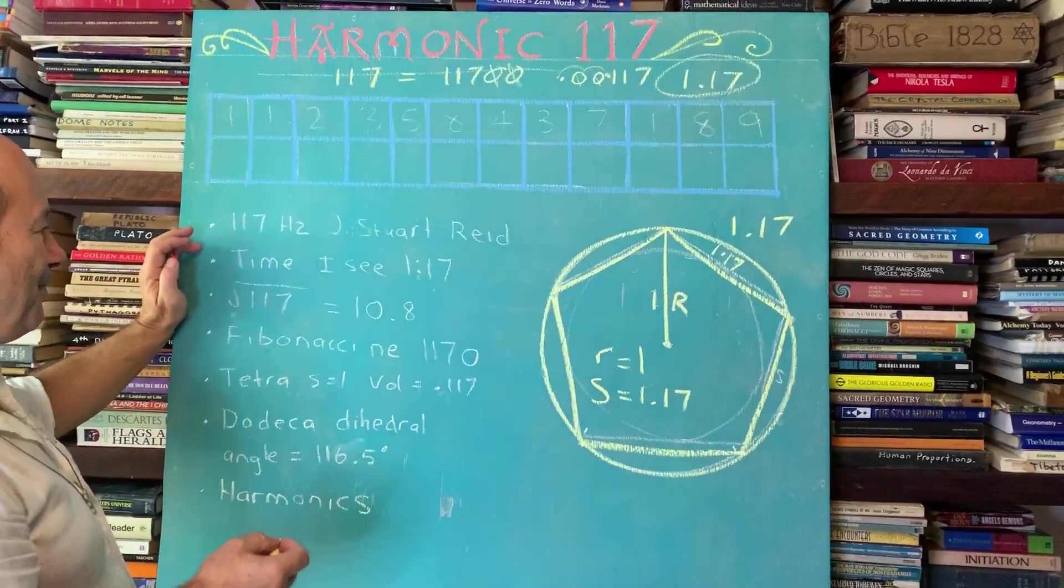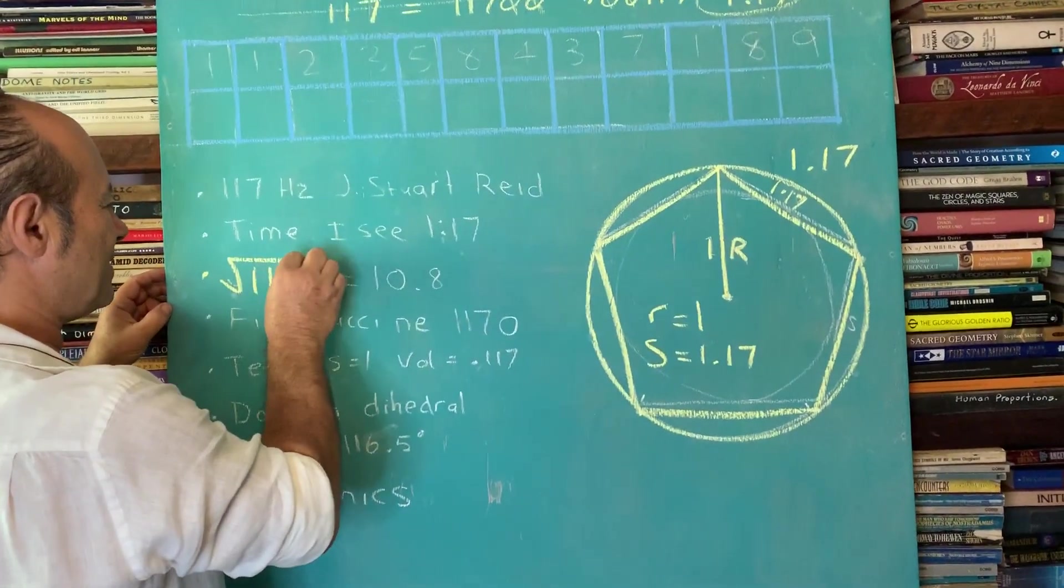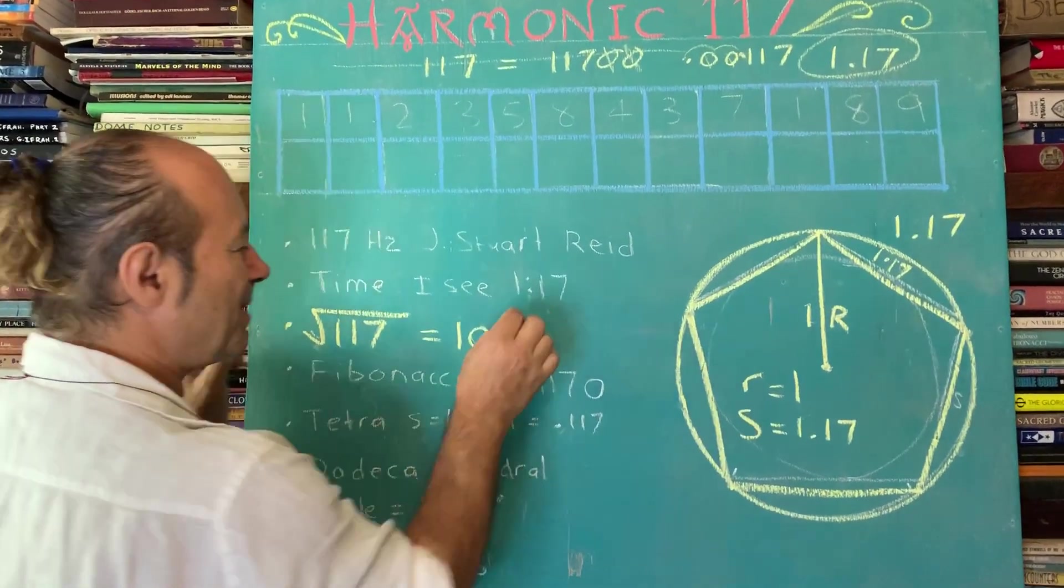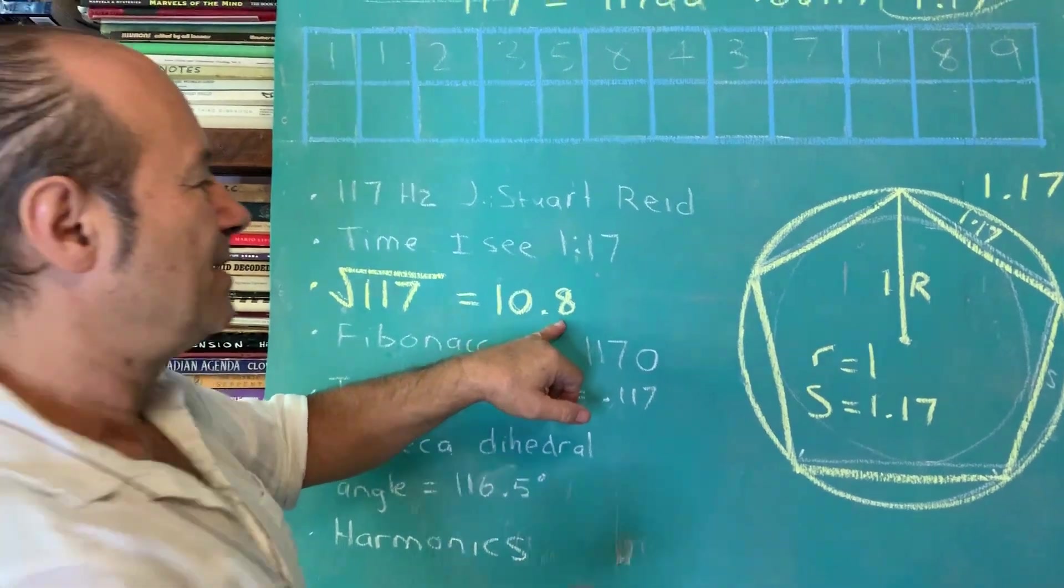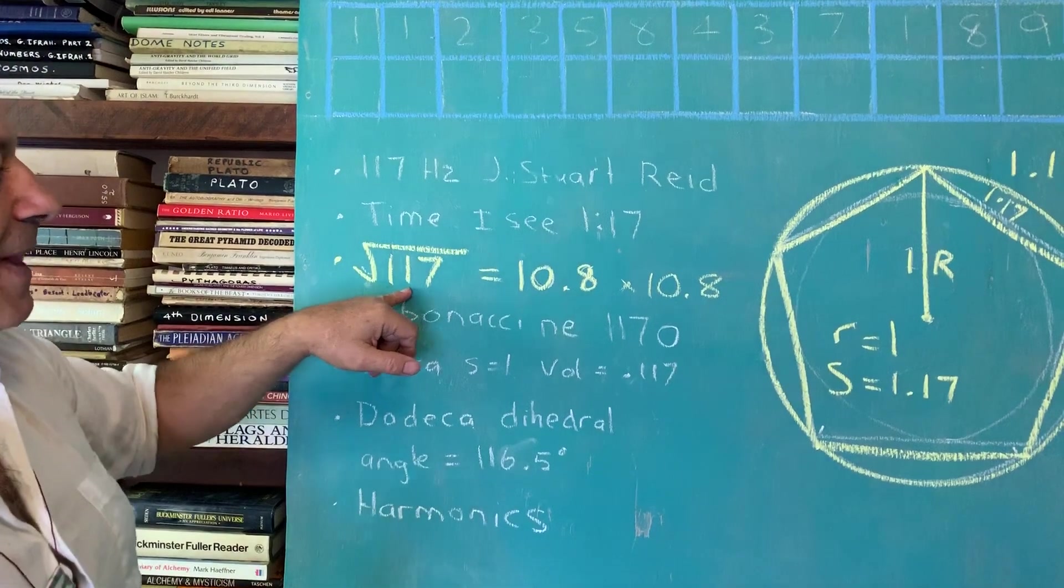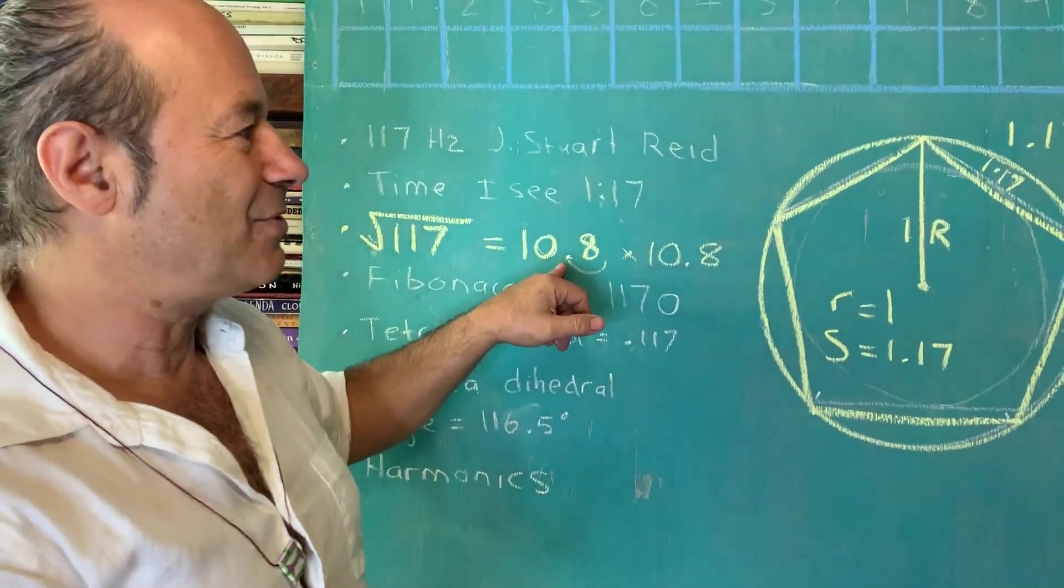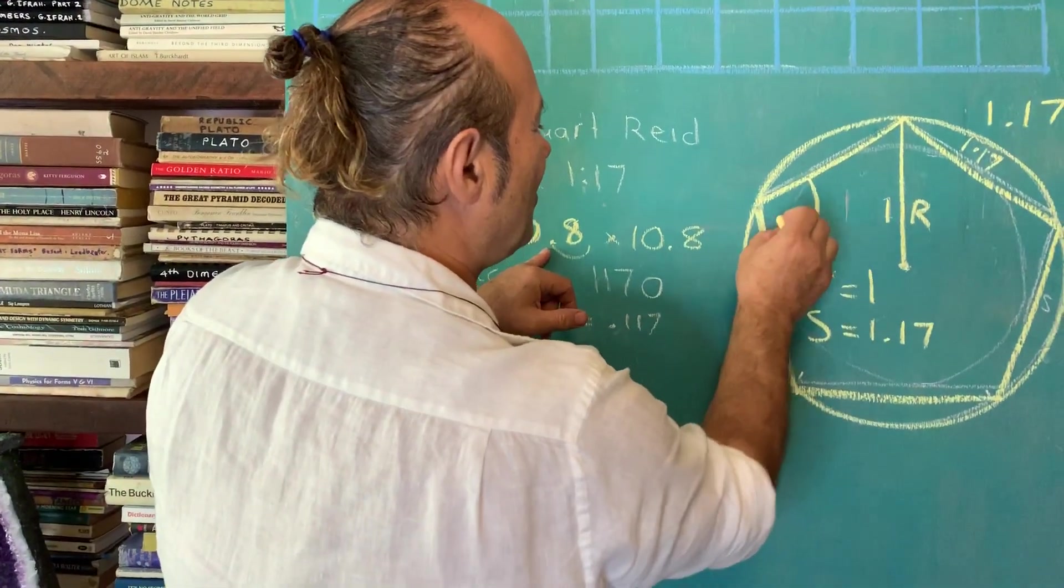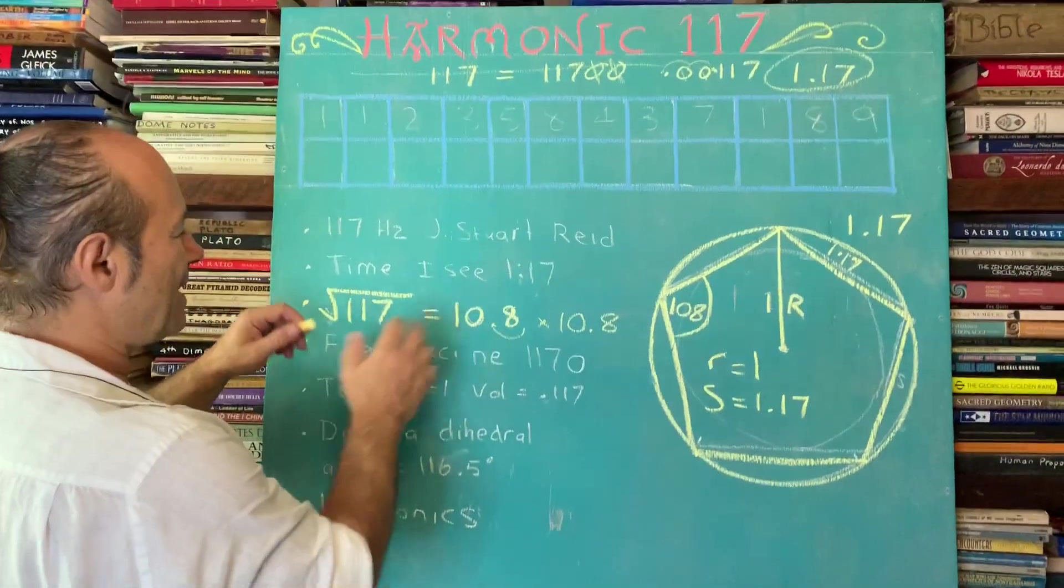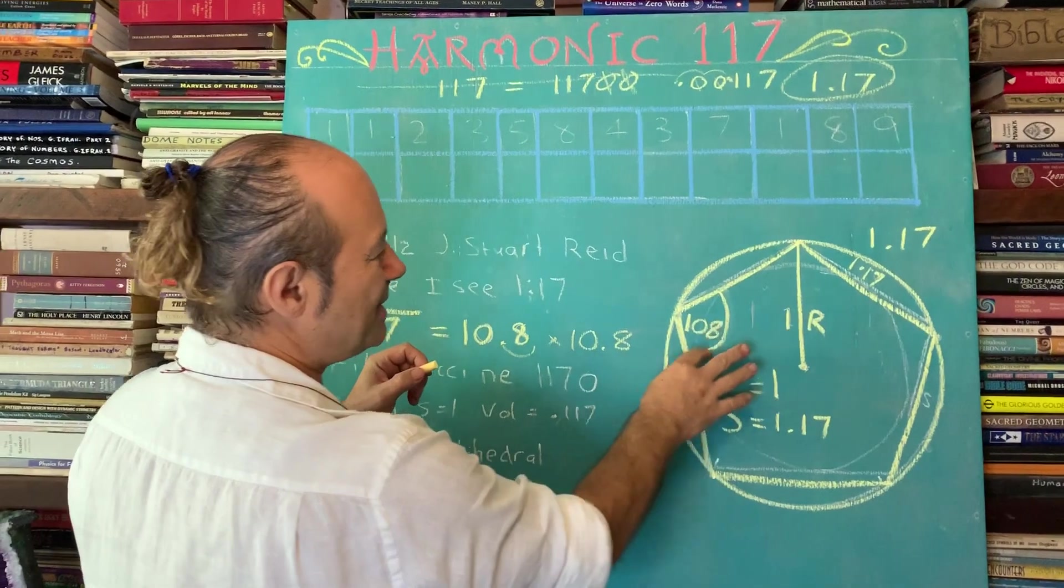And it's interesting that the square root over here, if I took the square root of 117, it equals a number called 10.8. So that just means 10.8 times 10.8 equals 117. And 10.8, if we slide the decimal, is the number 1.08 or 108. And it just happens that the angle in the pentagon here is 108 degrees. So it's showing that there's a relationship between 117 and 108. And there it is in the pentagon.